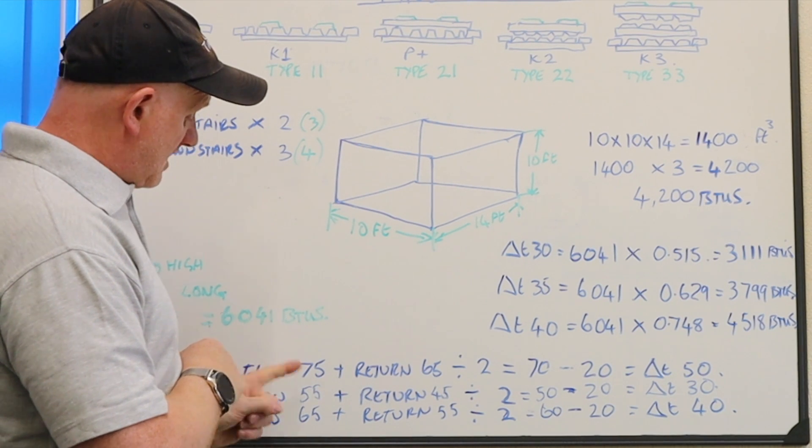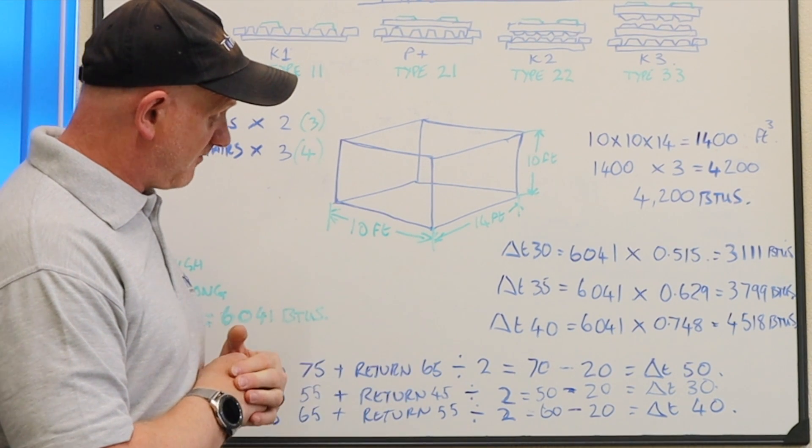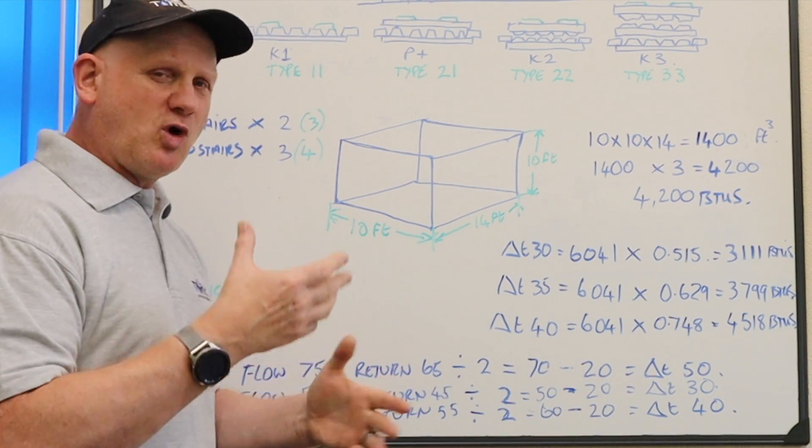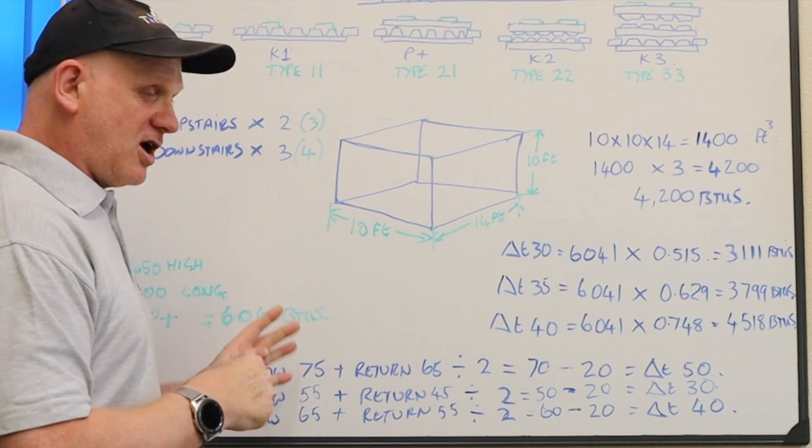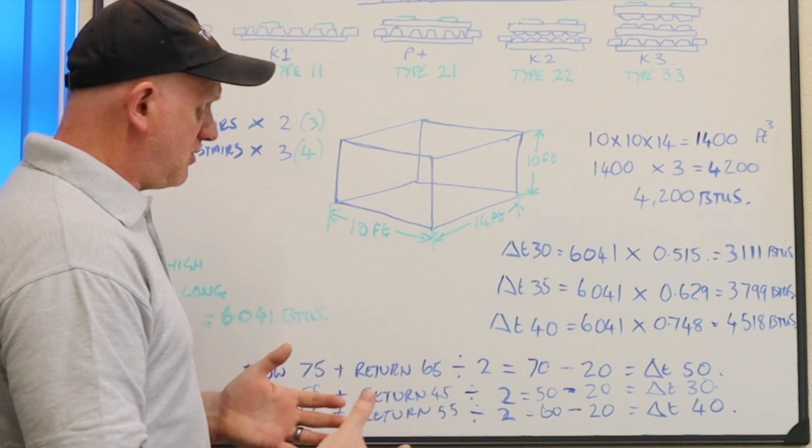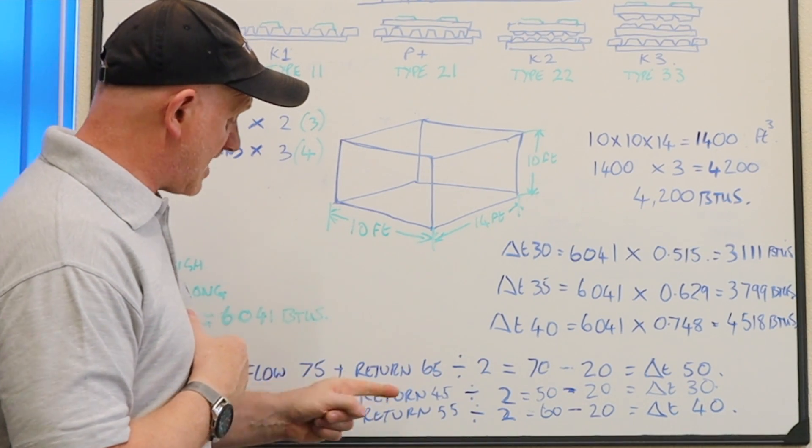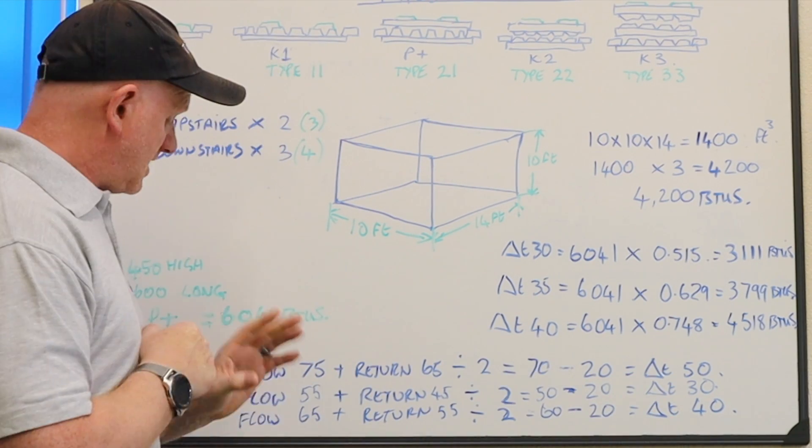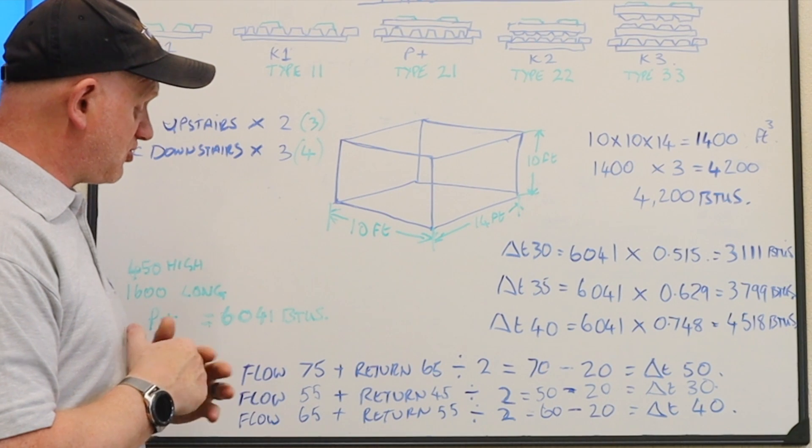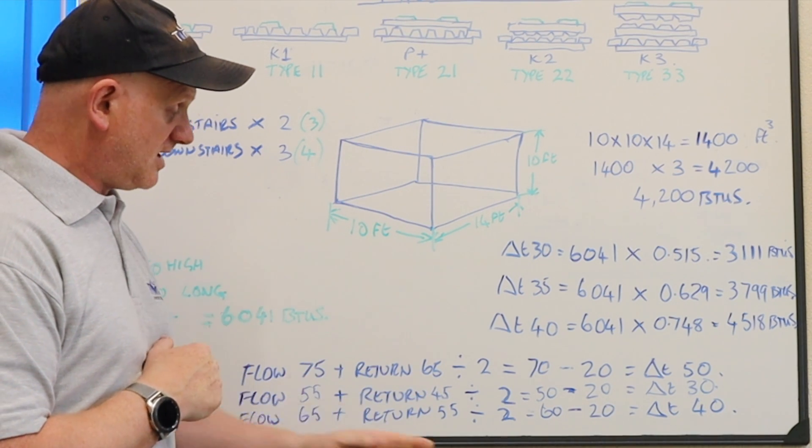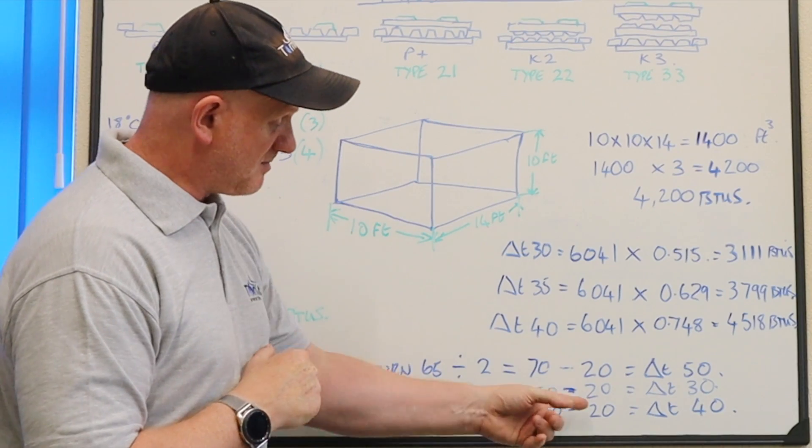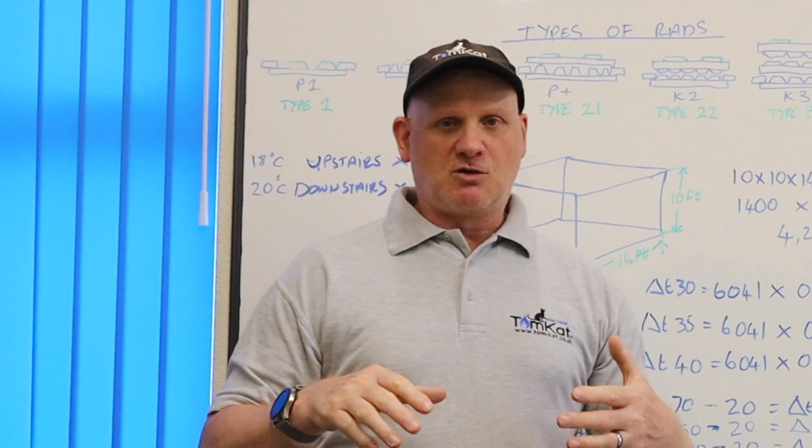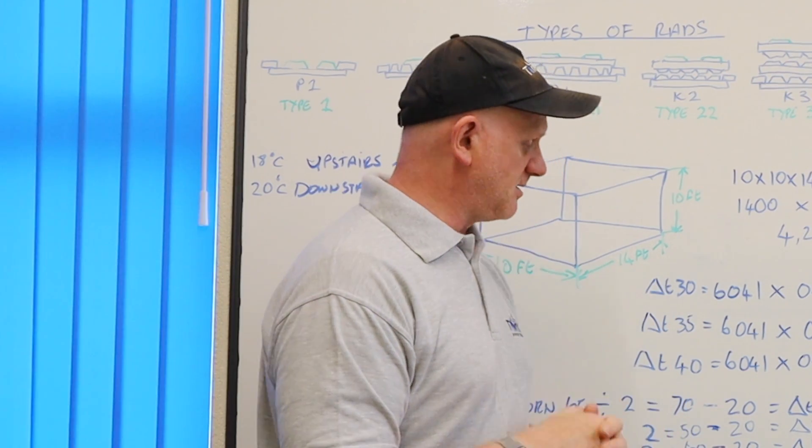Now we are going to use a temperature of 18 degrees centigrade for upstairs bedrooms and 20 degrees for downstairs. If we take off this 20 degrees because this is downstairs, then we would have a delta T of 50. Now I've worked out the delta T for 55 flow and 45 return, that gives us a delta T of 30. That's what we're aiming for now. Another common one would be a flow temperature of 65, a return temperature of 55, which gives us a delta T of 40.